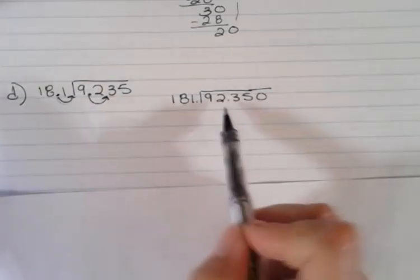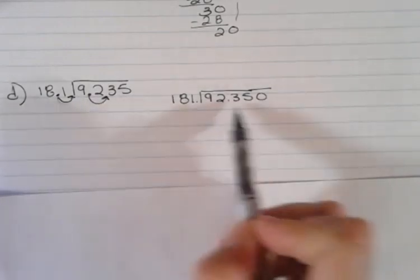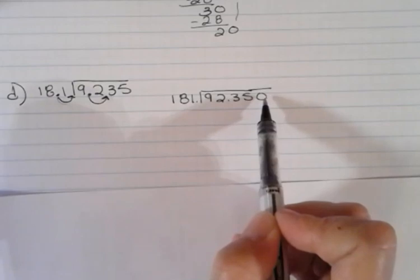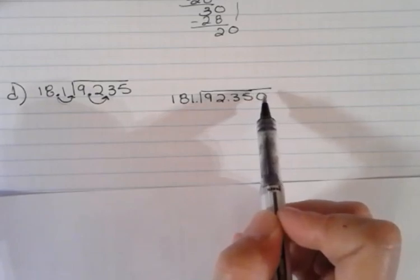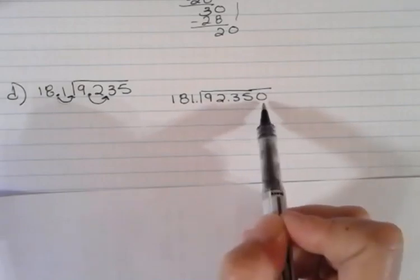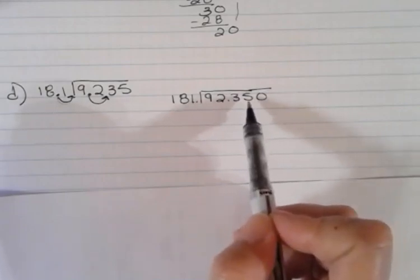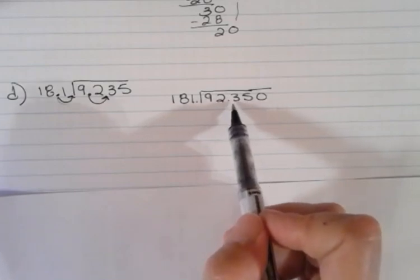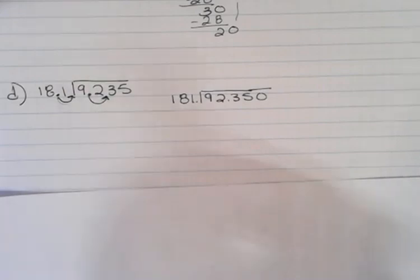My decimal point would be there. I have now 92.35 and I add one more zero. I'm doing that because specifically in my examples, I'm saying round to the hundredths. So I go out three places so I can round back to that second place. You may be asked to round to the tenths, in which case you would only go out two places. Or if you were asked to round to the thousandths, you'd go out four places and round back. Wherever you're asked to round to, you go out one extra place from there.